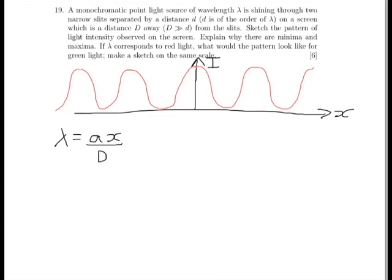Now, assuming D and a are both constants, that tells us that the wavelength is going to be proportional to the separation of the fringes, which is interesting for us here, because the final part of the question says, if lambda corresponds to red light, what would the pattern look like for green light? So, green light has a smaller wavelength than red light, has a higher frequency, a smaller wavelength, therefore the fringe separation must be smaller.